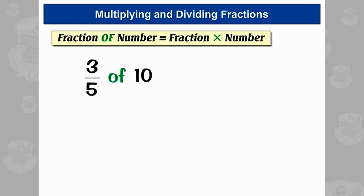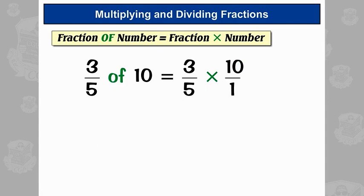Another example: 3-fifths of 10. That's 3-fifths times 10. We turn the 10 into 10 over 1, and then we cancel down — they both divide by 5. Then 3 times 2 is 6, 1 times 1 is 1, and 6 over 1 is 6.